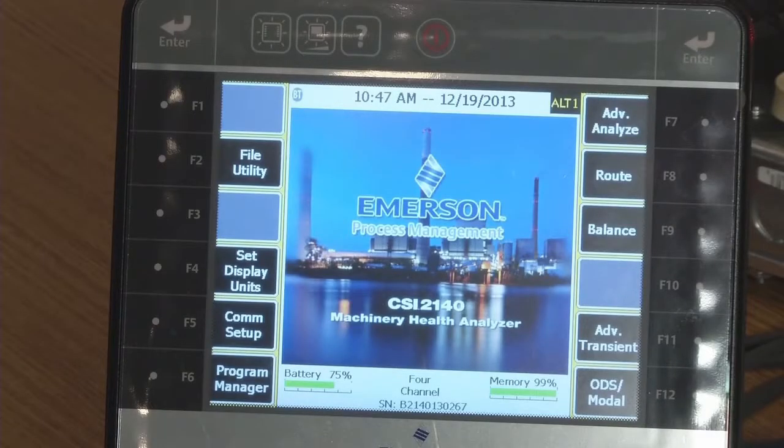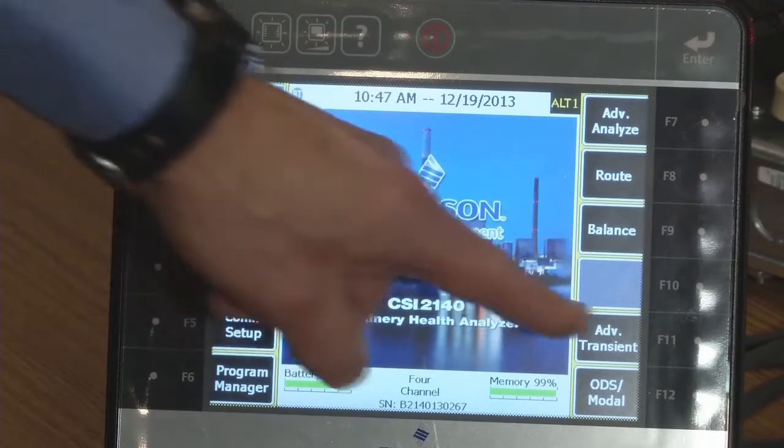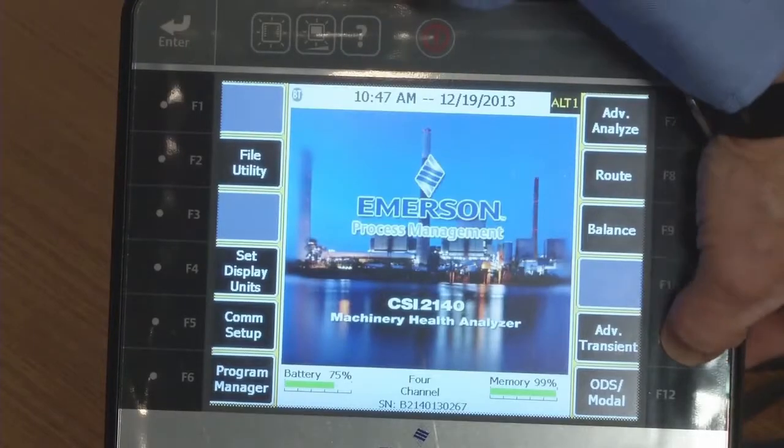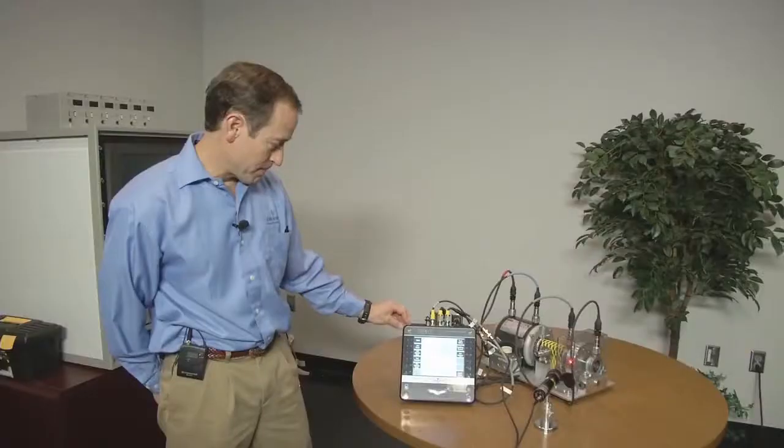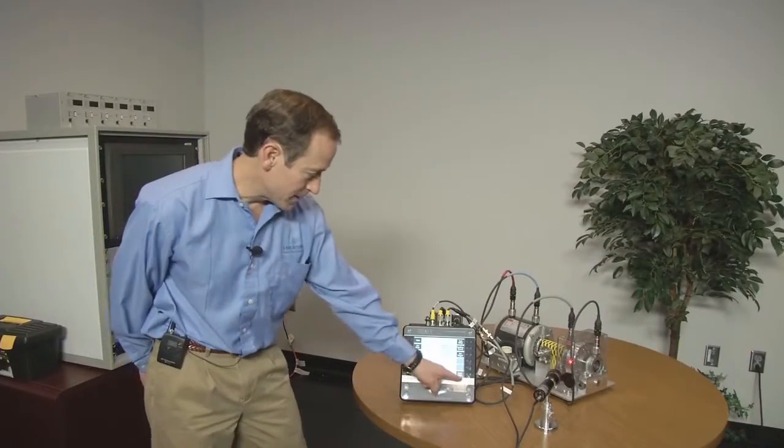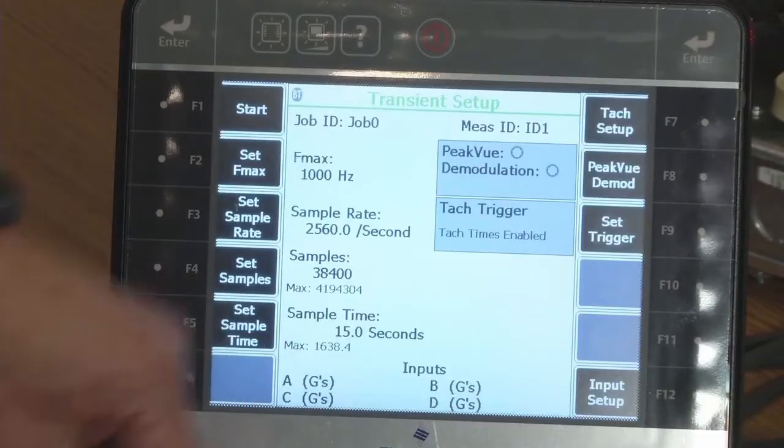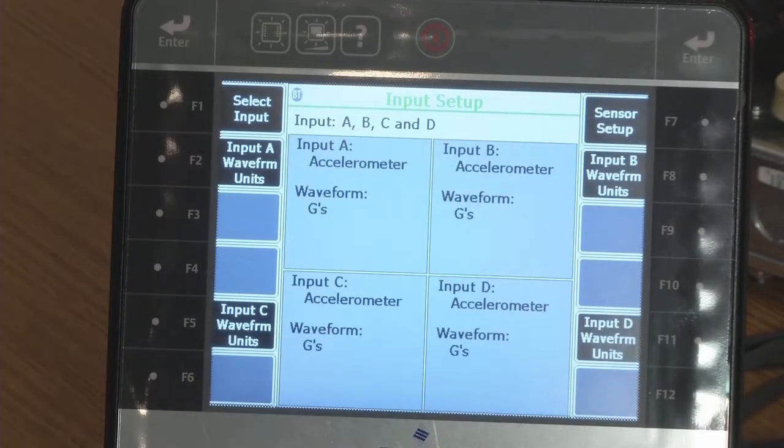So to begin transient analysis, from the home page of the 2140, click F11 to open up transient. And the first thing you want to do is verify that you have all four sensors programmed to collect data.